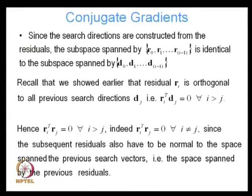When will this process break down? When the residual becomes 0. If during iteration the residual becomes 0, I cannot construct a new search direction from it — but that is not a problem, because residual equal to 0 means the iteration has converged and I have reached the true solution. So I do not need the residual or any more search directions. Since the search directions are constructed from the residuals, the subspace spanned by r_0 through r_{i−1} is identical to the subspace spanned by d_0 through d_{i−1}.